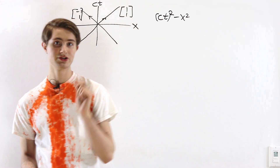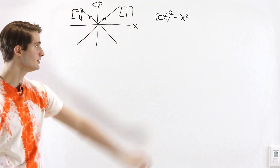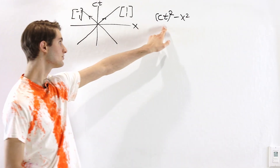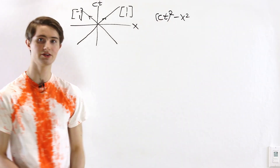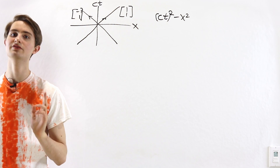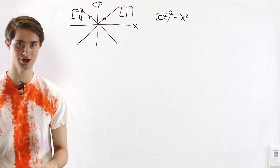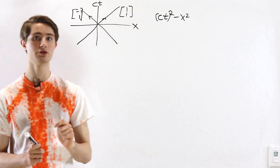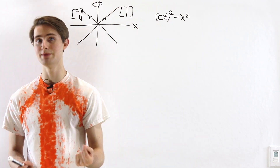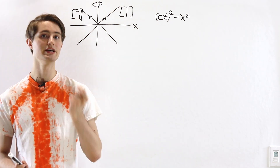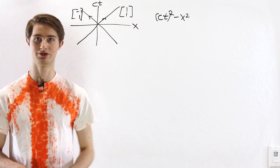We are going to prove that the spacetime interval ct squared minus x squared is invariant under Lorentz transformation, and therefore it's the same in every inertial reference frame.